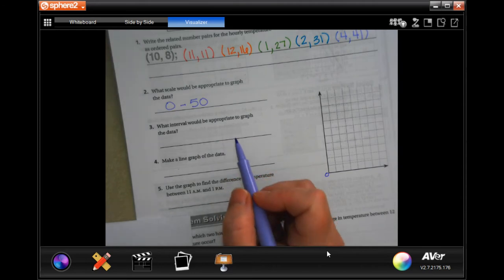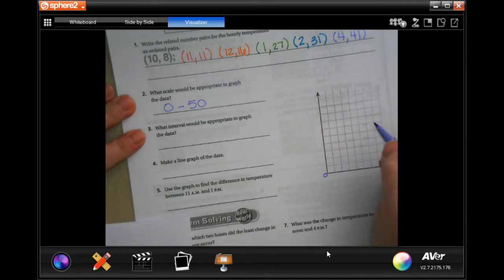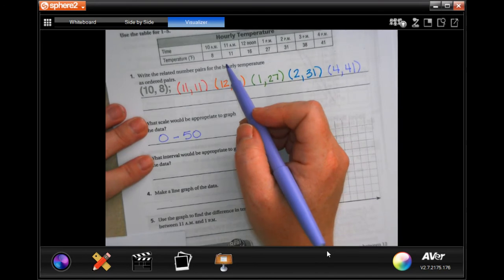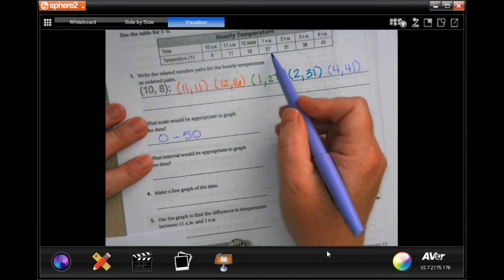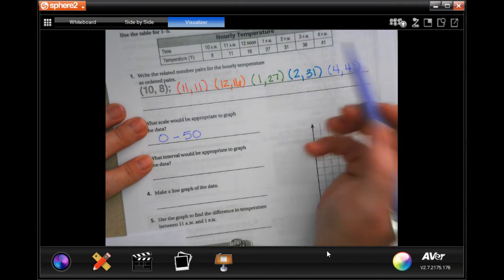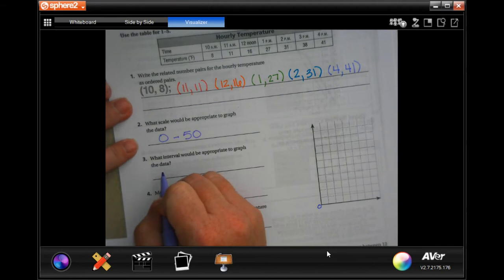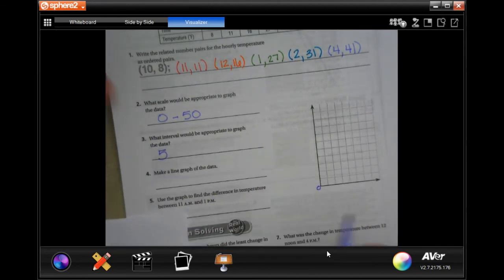What interval would be appropriate to graph the data? Well, I would do intervals of five, because you've got 8 is almost 10, 11 is just over, I mean we're almost at 15, 25 and 30 or just over 30. So I would do every five, by fives.